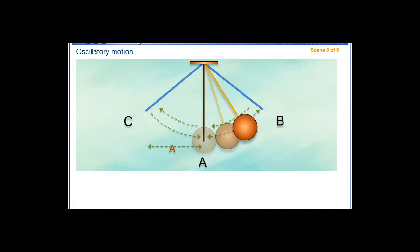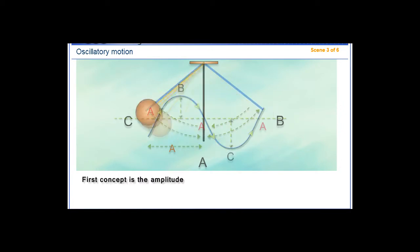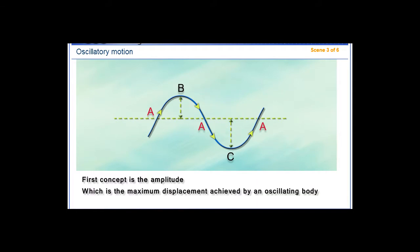There are four concepts related to oscillatory motion. First concept is the amplitude, which is the maximum displacement achieved by an oscillating body away from its point of rest.